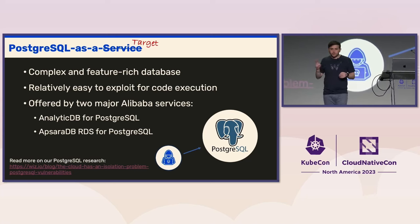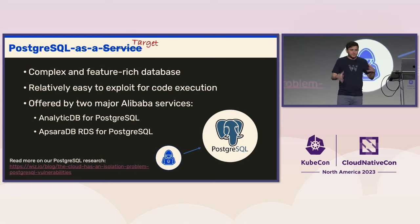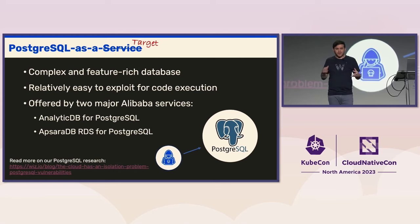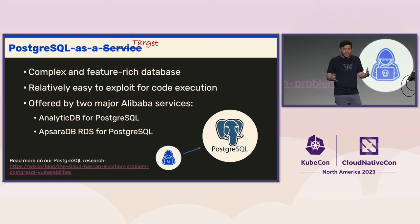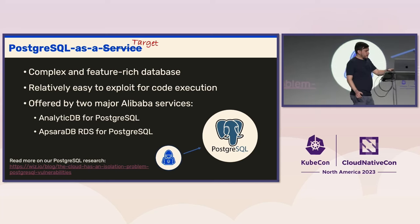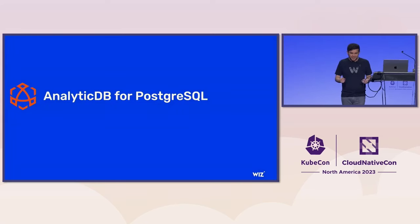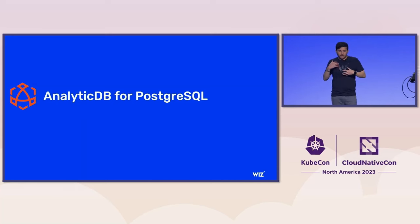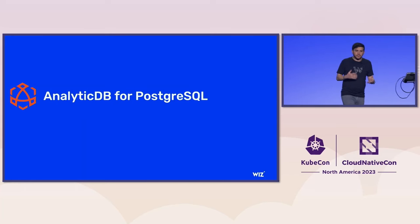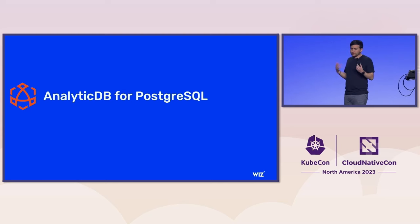PostgreSQL is offered by two database services in Alibaba Cloud. One is called AnalyticDB, which is the big data service Alibaba provides, and the other is called AppServerDB RDS, which is a regular database service. Let's talk about AnalyticDB and how we basically hacked that service. We started out by creating a new database on our account and looking for these vulnerabilities until we were able to gain code execution on one of those databases.